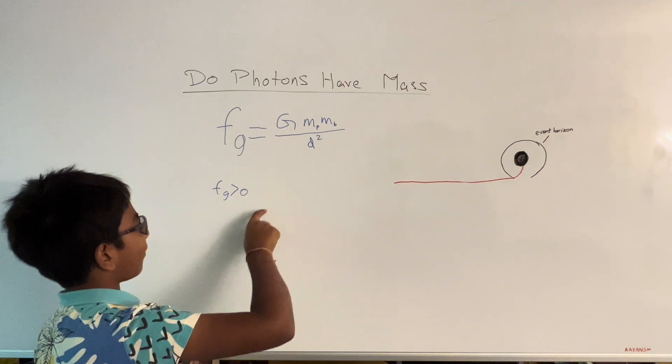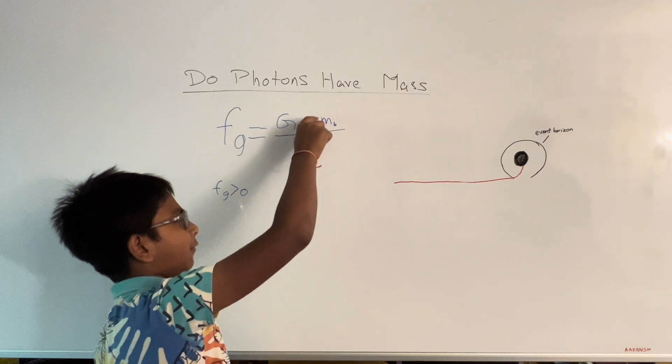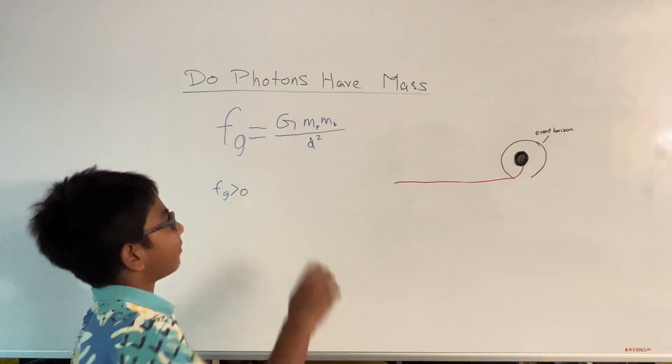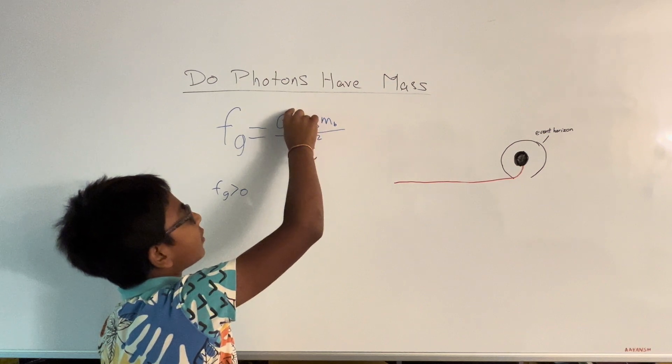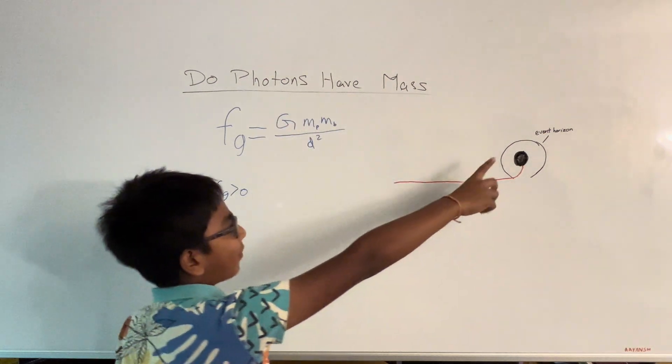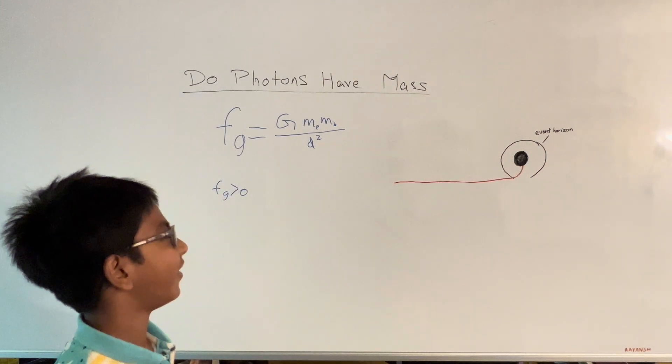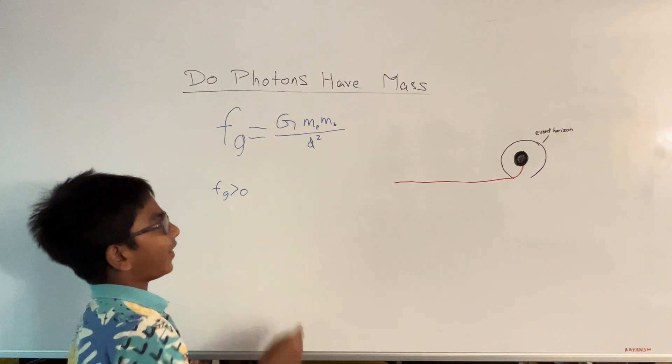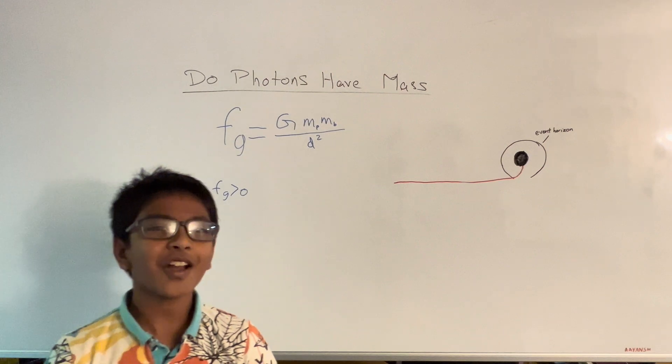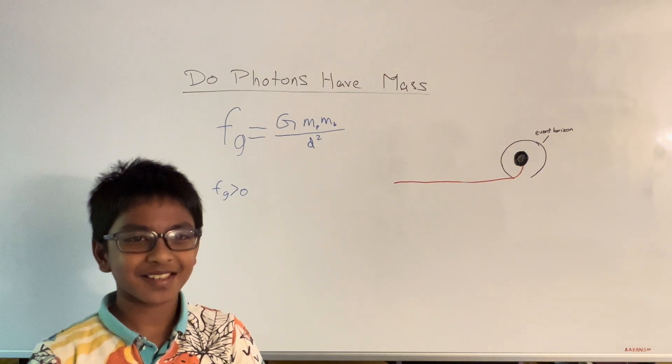And we know that the force of gravity is greater than zero. So the mass of the photon cannot be zero because we know that if you multiply it by G, it's still going to remain zero. You multiply it by the mass of the black hole, it's still zero. And if you divide by the distance squared, it is still zero because zero multiplied or divided by anything will stay zero.